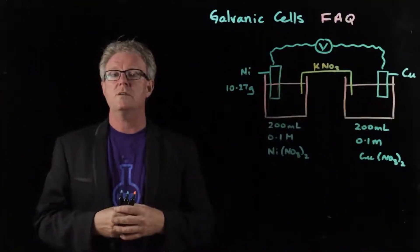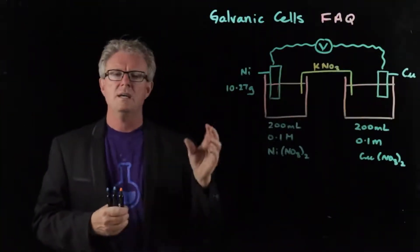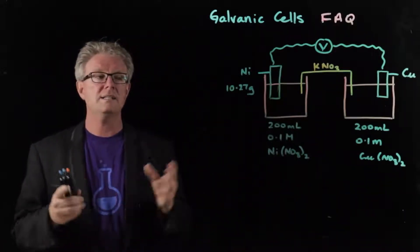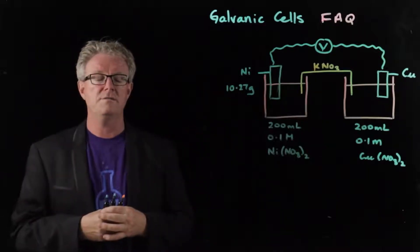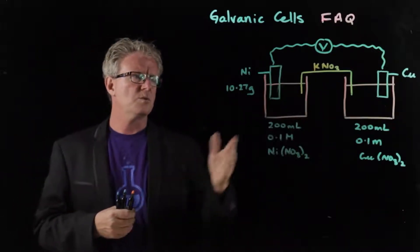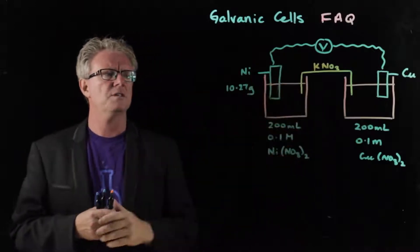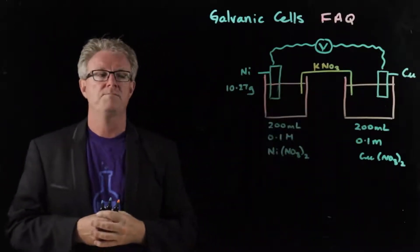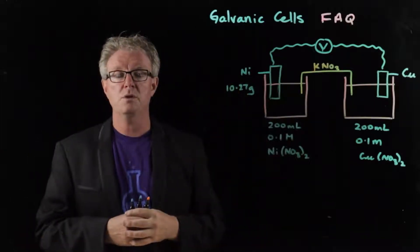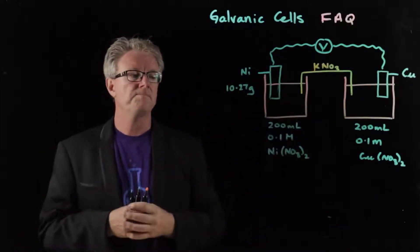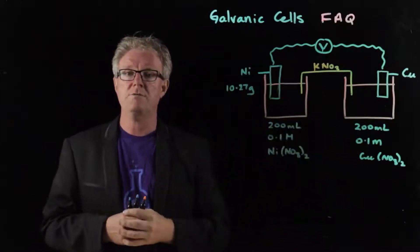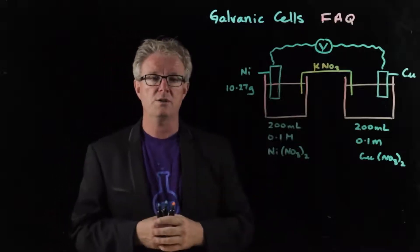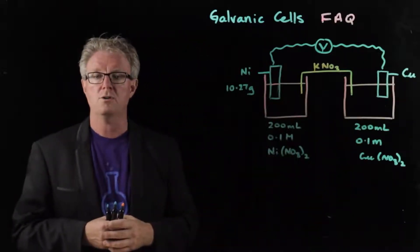Welcome to the fifth video on galvanic cells, frequently asked questions. This is a slightly more challenging question with this particular cell. We've got two half cells: one with the nickel electrode and one with the copper electrode. The nickel electrode is 10.27 grams initially. The electrolyte solution is 200 mL of 0.1 molar nickel nitrate, and the same for copper nitrate.